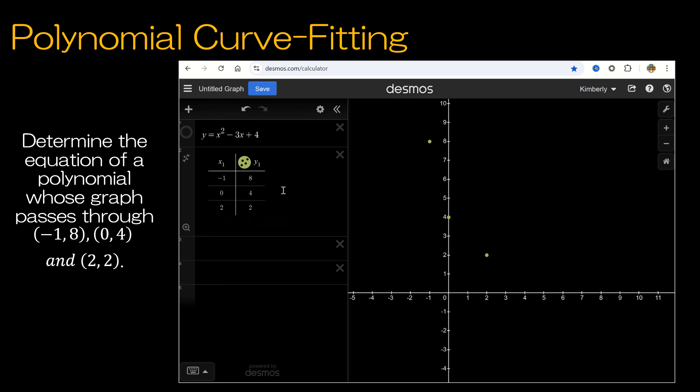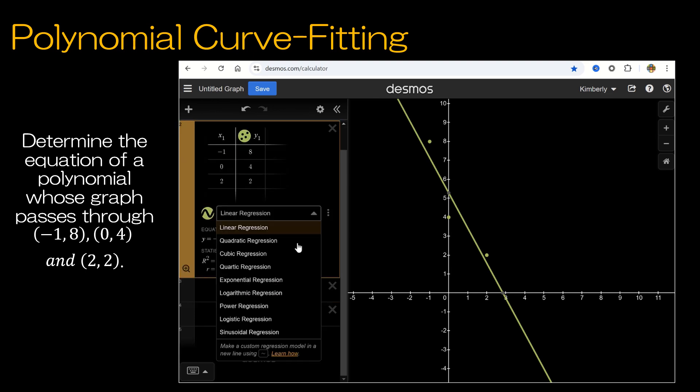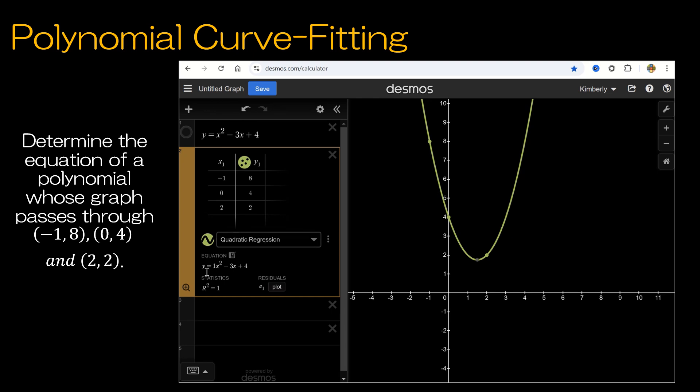A great way to check is to enter this table, which I did by clicking on plus and then table. When I long click on that circle, I can click on lines. If I click on line, it just connects them with a straight line, but it says add regression. It goes to linear regression, but this isn't a straight line. We want to match this with a polynomial, and we know it's quadratic, so clicking quadratic regression gives me the equation 1X squared minus 3X plus 4. This is a really great way to check your work.